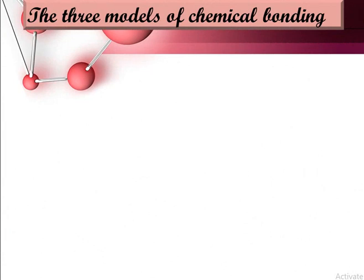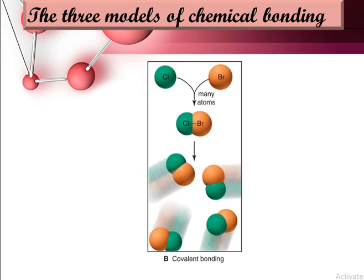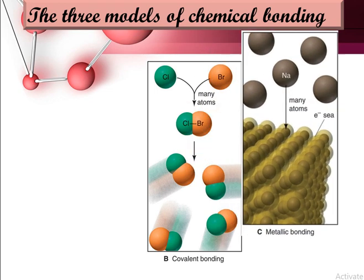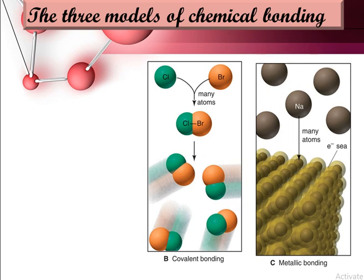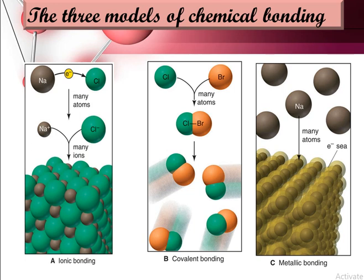Three models of chemical bonding: first, covalent bonding involves many atoms joined together by sharing of electrons — for example, chlorine and bromine joined by sharing of electrons. Second, metallic bonding involves many metal atoms, for example sodium atoms, dispersed in an electron sea. Third, ionic bonding involves the transfer of electrons, and many atoms form ions.